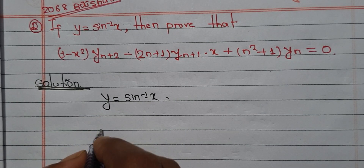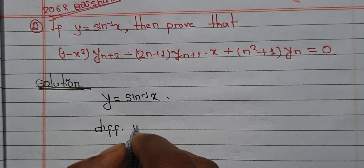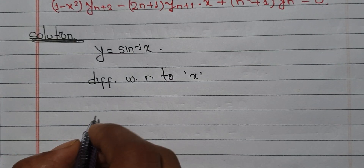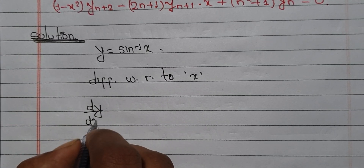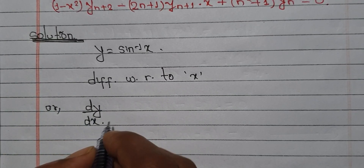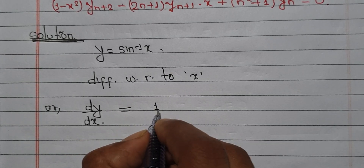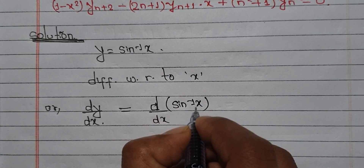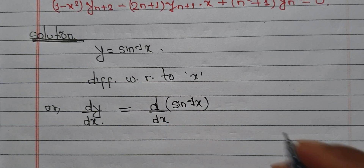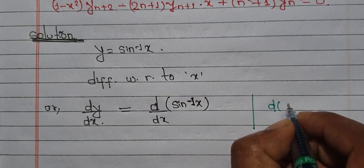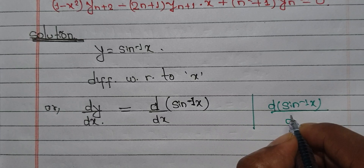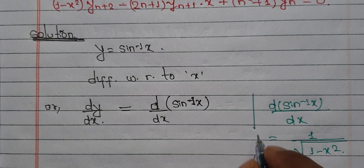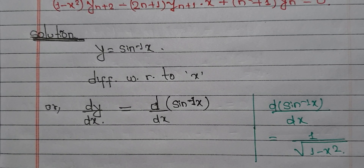Now we differentiate y with respect to x. So dy/dx — we differentiate sine inverse x. The derivative of sine inverse x is 1 by root over 1 minus x squared. So the derivative of sine inverse x is 1 by root over 1 minus x squared.